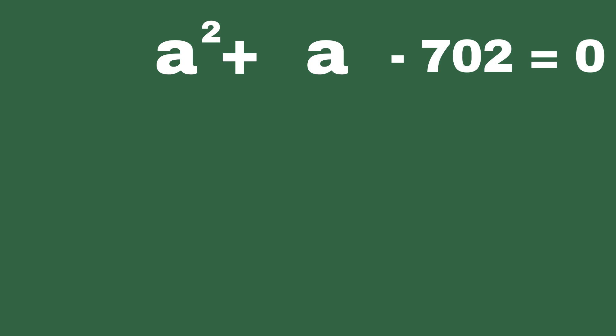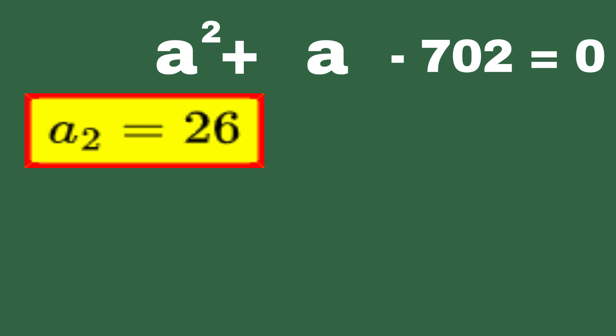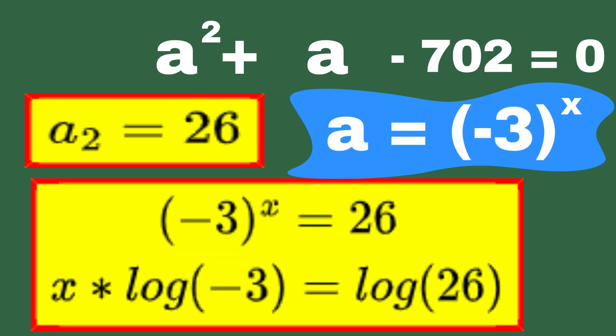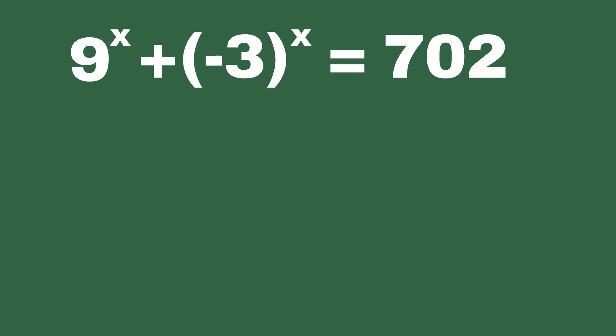The second case is a2 equals 26. Now, this is where things get fun. It doesn't have a simple, neat integer solution like the first one. In fact, to solve for x here, we need to use logarithms. Take the logarithm of both sides. However, here's the issue, log minus 3 is undefined in the real number system, because logarithms of negative numbers don't exist for real values. This means there's no real solution to the equation. So, after working through all the steps and considering both cases, we can confidently say that the only valid solution here is x equals 3.